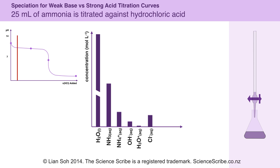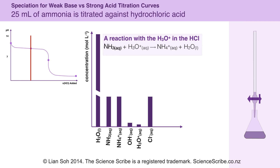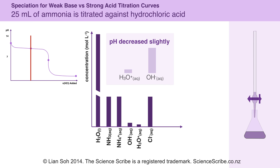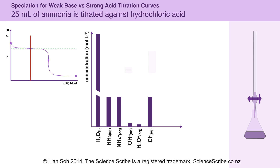As we add hydrochloric acid, the hydrochloric acid provides the flask with hydronium ions. Those hydronium ions react with the ammonia, which is why you see that bar decrease. In the process, it produces ammonium ions, and that's why the concentration of ammonium increased. There is no reaction with the chloride ions — as we add hydrochloric acid, we're not just adding H3O+, we also add chloride minus ions, but since chloride ions don't react with anything in the flask, it's a spectator ion. The pH also decreased slightly on the titration curve, but since the contents of the flask is still alkaline, the concentration of hydroxide ions is still slightly higher than the concentration of hydronium ions.